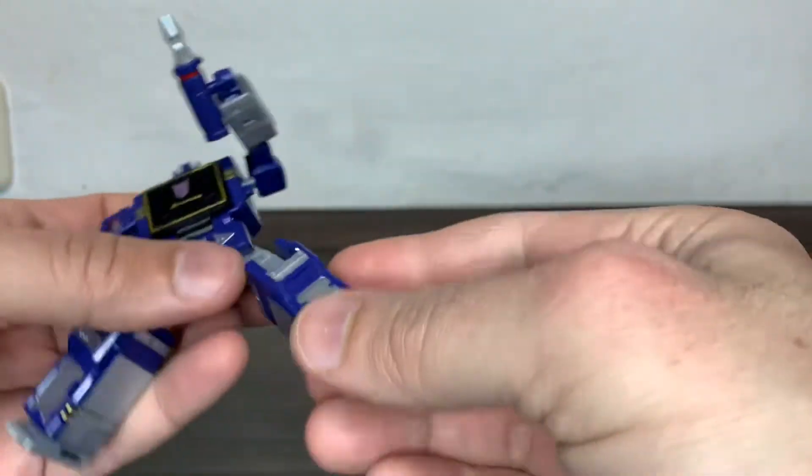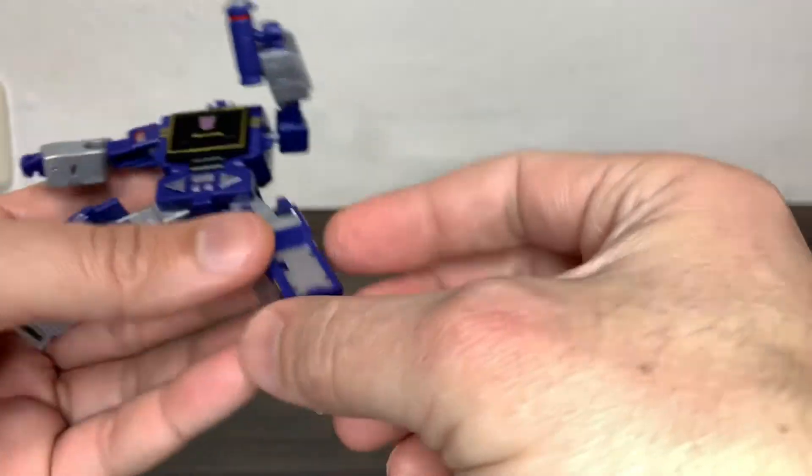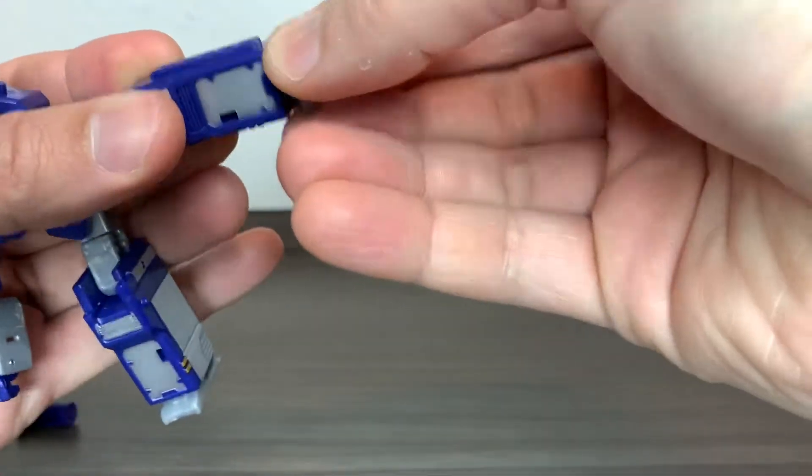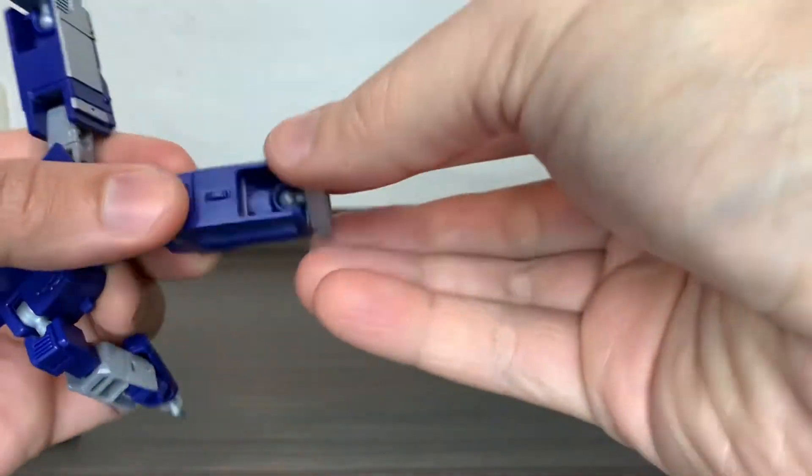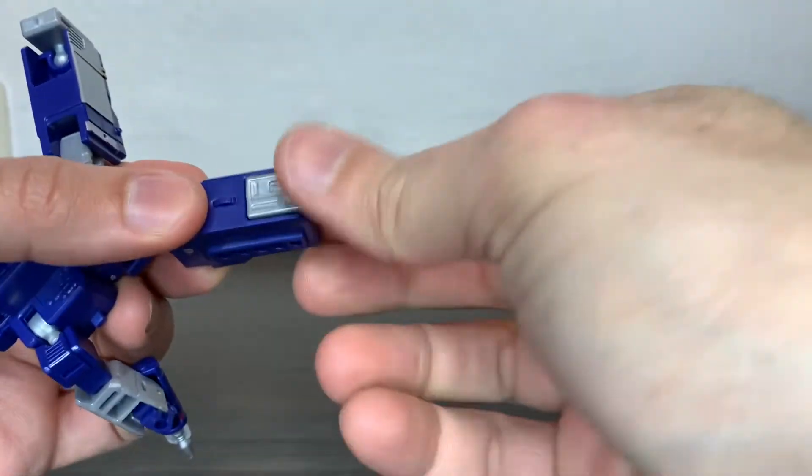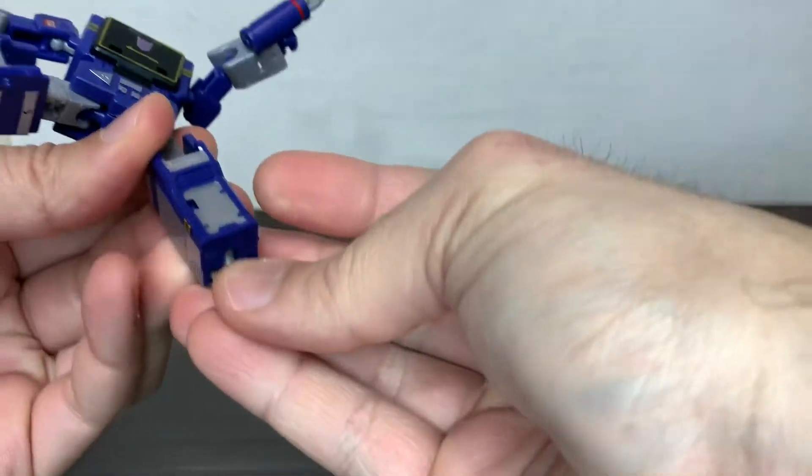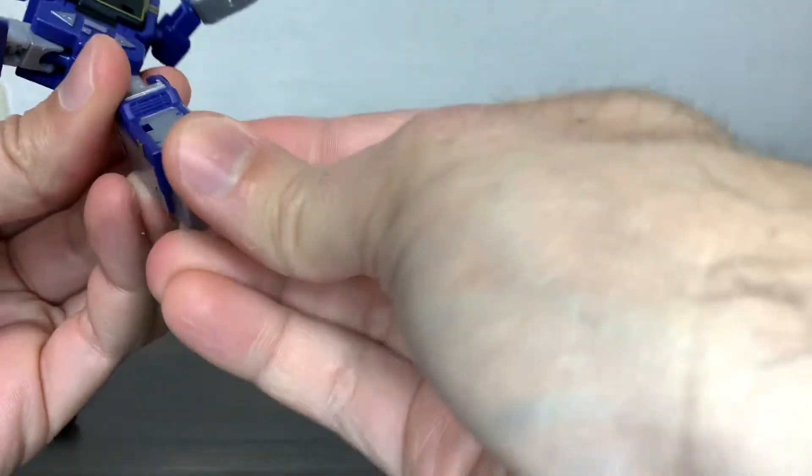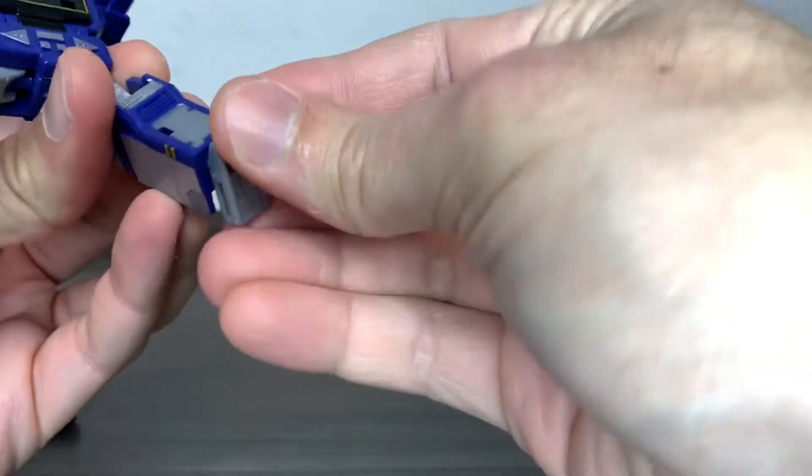The feet are on a little ball joint, also partially due to transformation. He can move the feet up and back a bit. He has a little bit of play just up and down, not to the side sadly, which would be great.